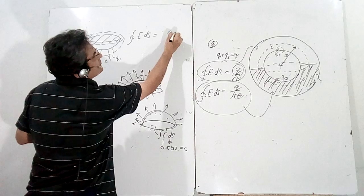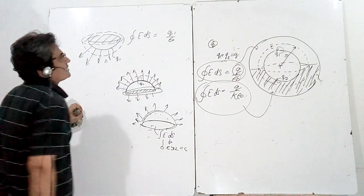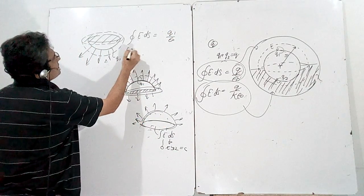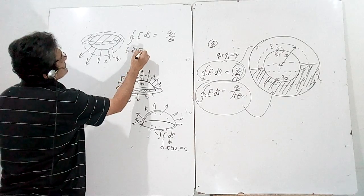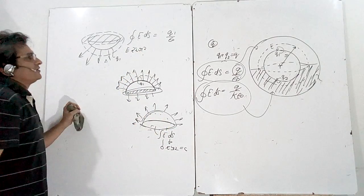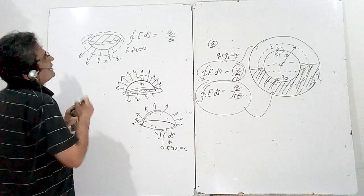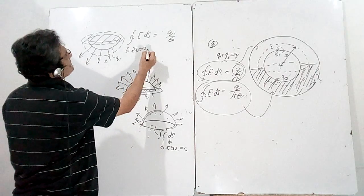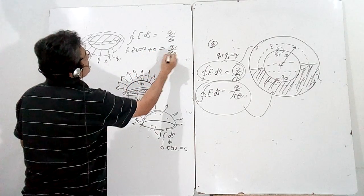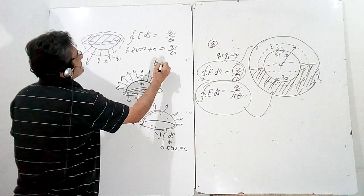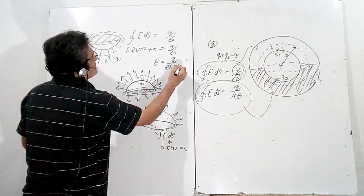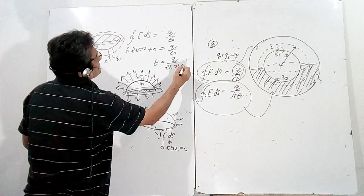So the total E·dS equals the contribution from the curved part only: E × 2πr² (the curved surface area of the hemisphere), plus zero for the flat part, equals q1/ε₀. Therefore the electric field in the vacuum region is E = q1 / (2πr²ε₀).